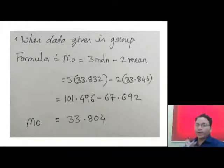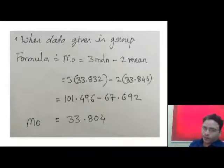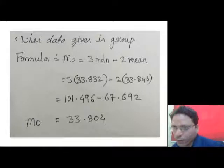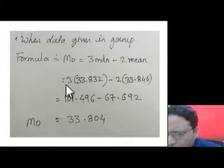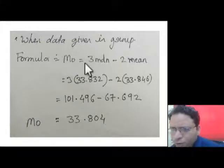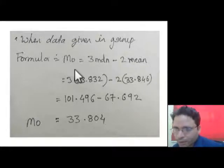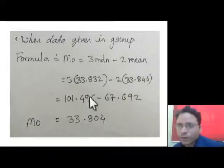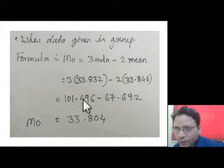To calculate mode when data is given in a group, you first need to calculate mean and median, because the formula for mode is: Mode = 3 × Median − 2 × Mean. If you apply this formula, you will get the value of mode.